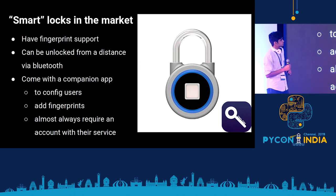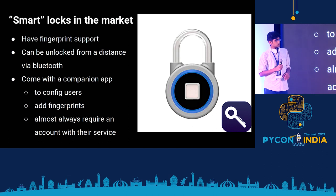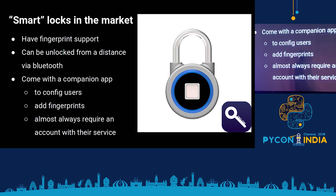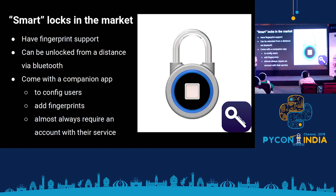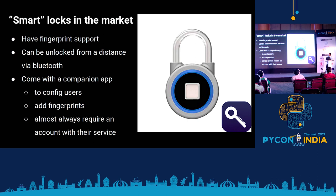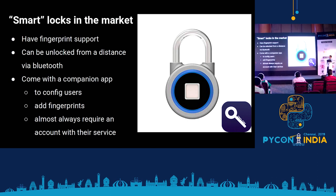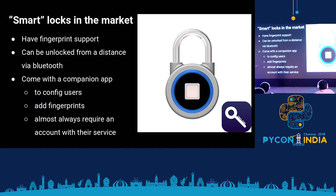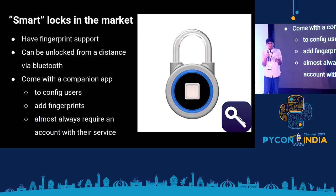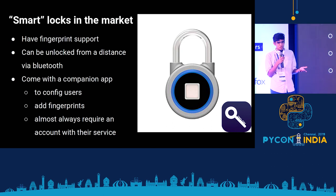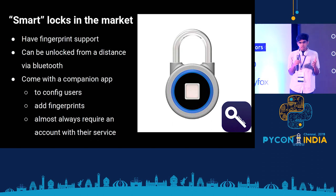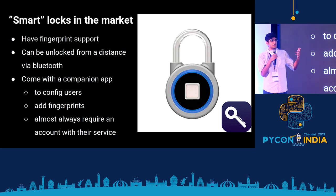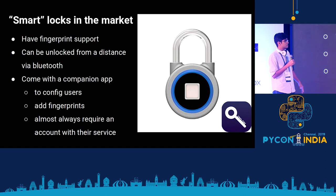Before we dive into our specific lock, we'd like to establish what we expect from a smart lock in general. We expect it to lock and unlock using a fingerprint, lock and unlock via Bluetooth, and come with a companion app. This companion app generally has actions the user can perform: configure users, add and remove users, add fingerprints to unlock the lock. And it almost always requires you to sign up for an account with their online platform.